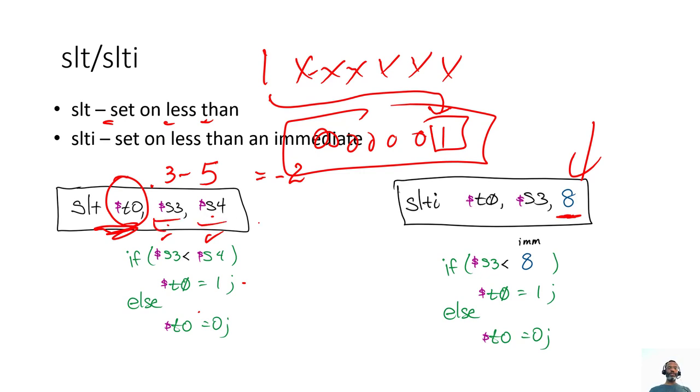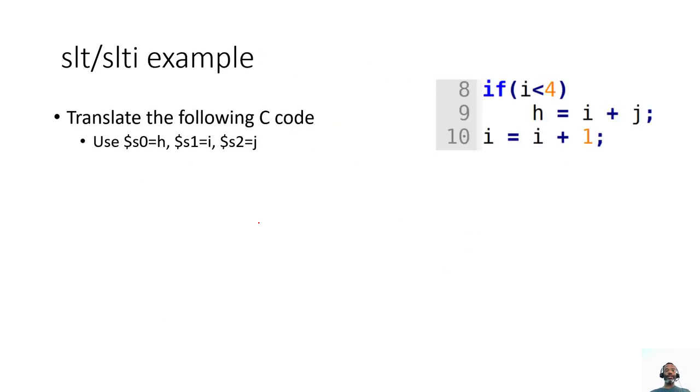We saw previously how if s3 is less than s4, t0 gets set to a 1. What I want to do is do an example where we look at how this would be used to convert or translate C code.